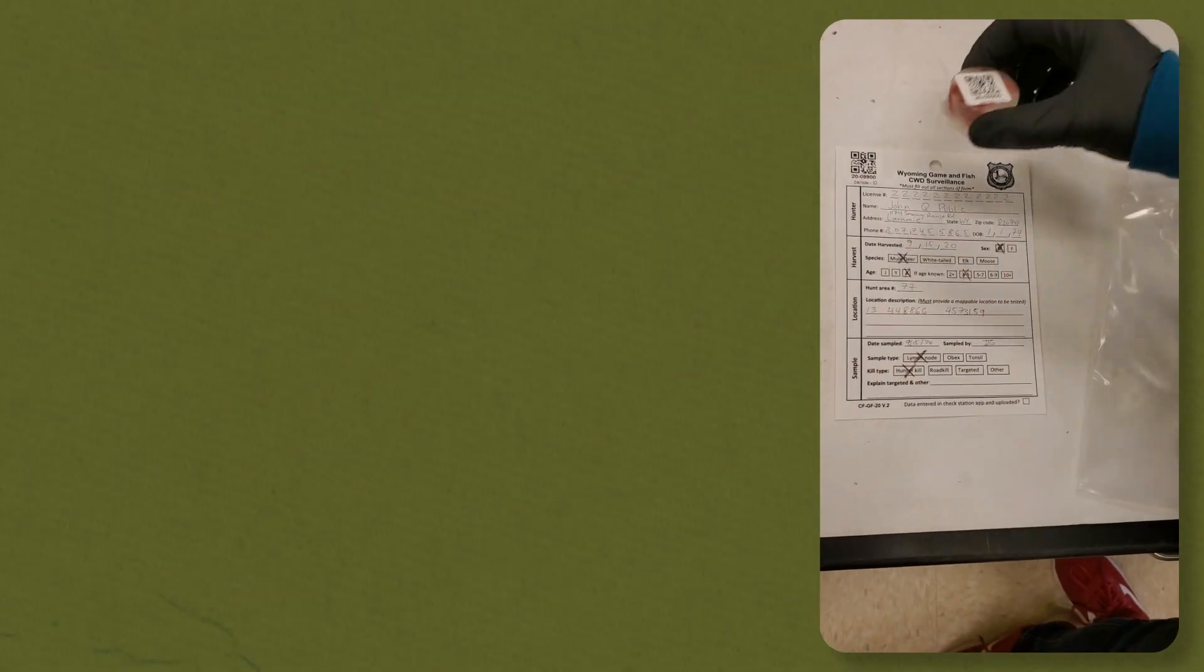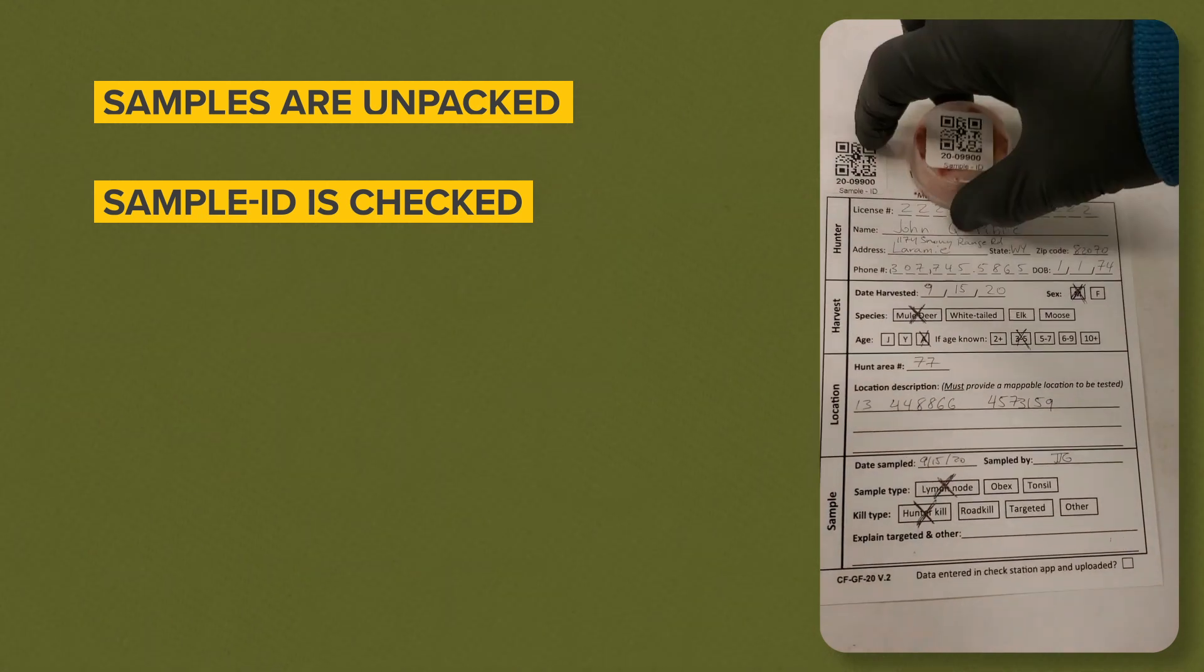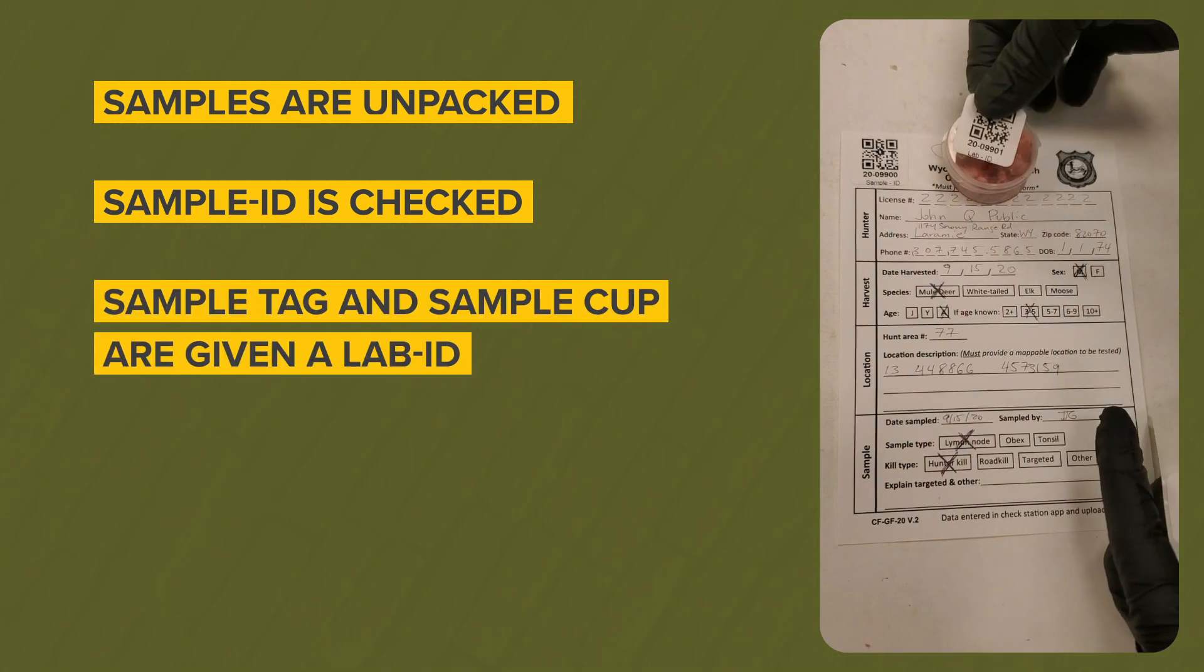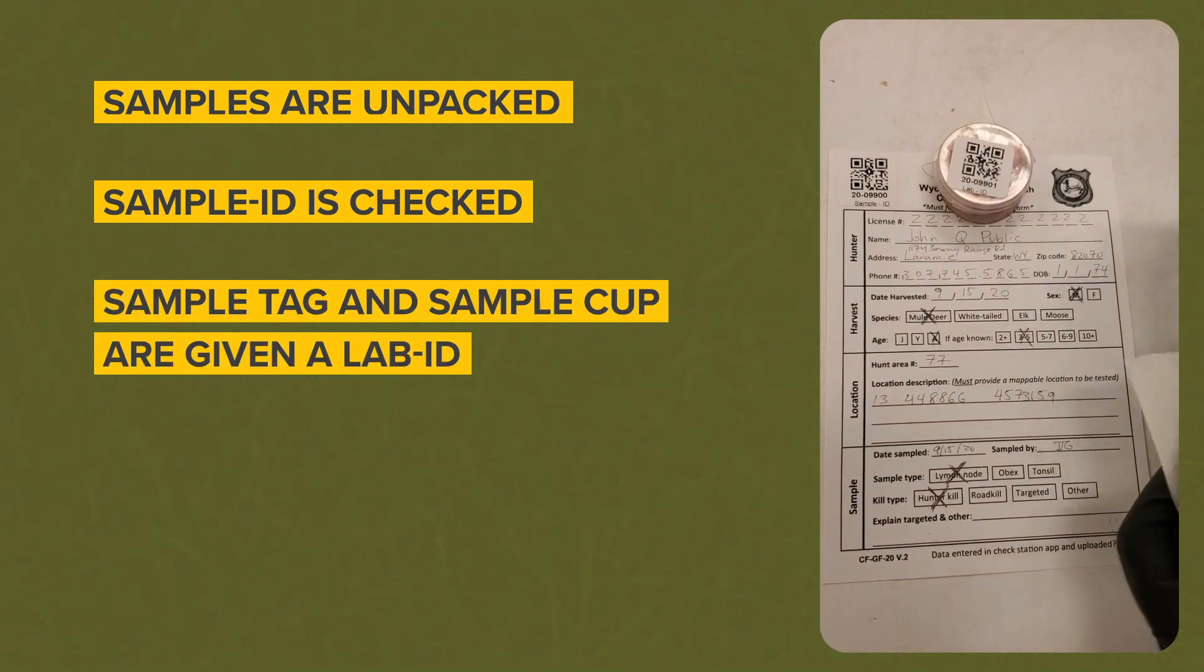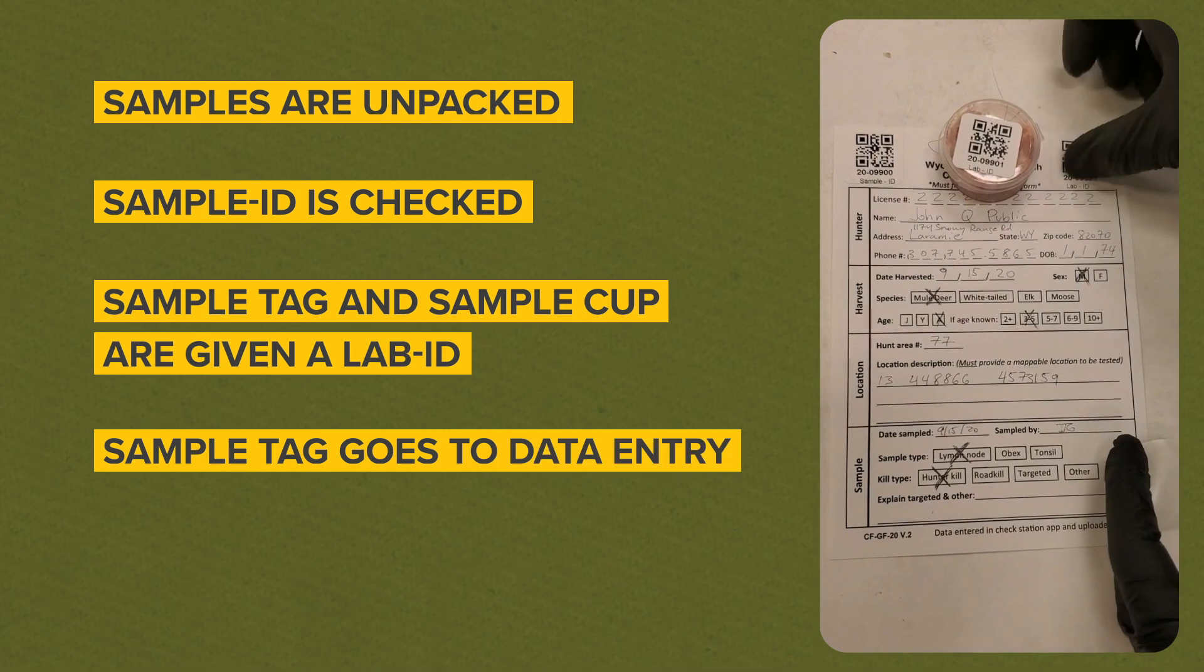At the lab, samples are unpacked, the sample ID is checked, and the sample tag and sample cup are given a lab ID. Then, the sample tag goes to data entry, and the tissue goes to testing.